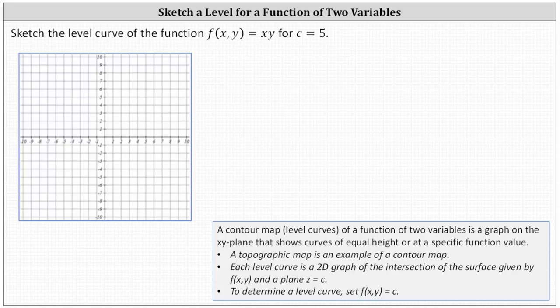Sketch the level curve of the function f of x comma y equals xy for c equals 5. Recall each level curve is a 2D graph of the intersection of the surface given by f of x comma y and a plane z equals c. To determine a level curve, we set f of x comma y equal to c.